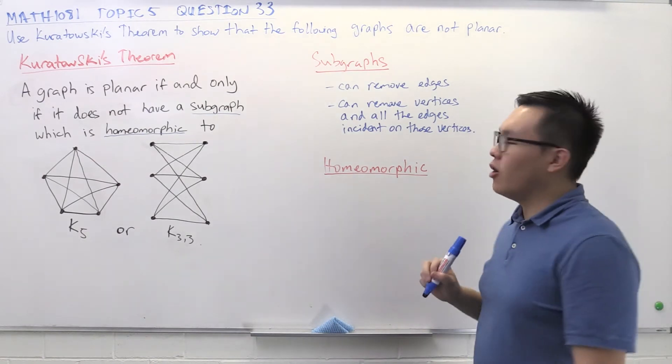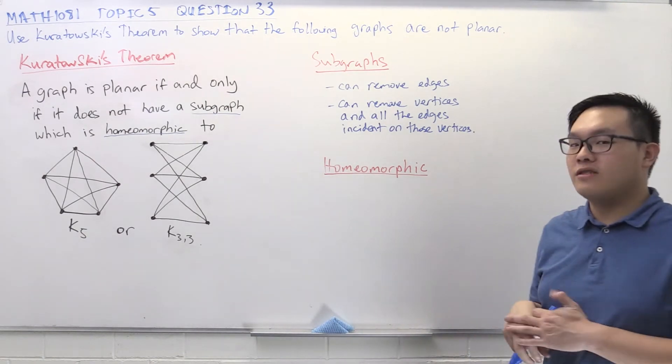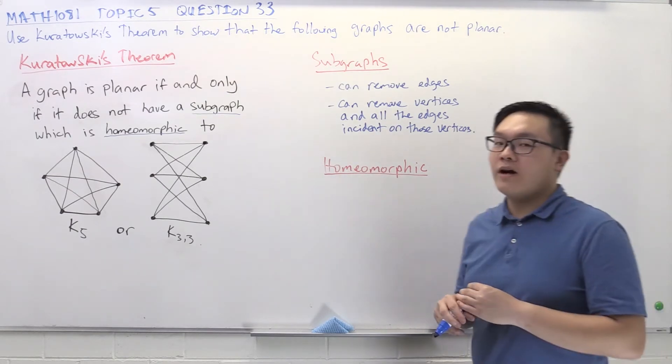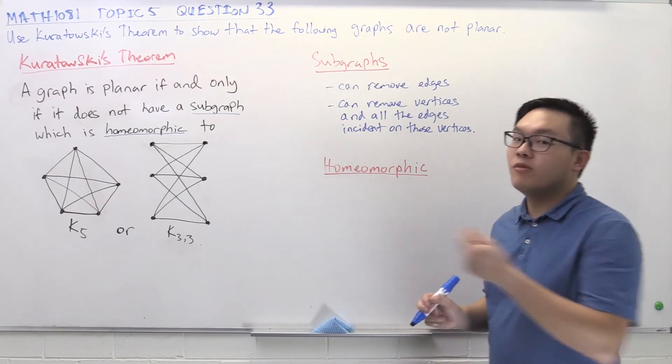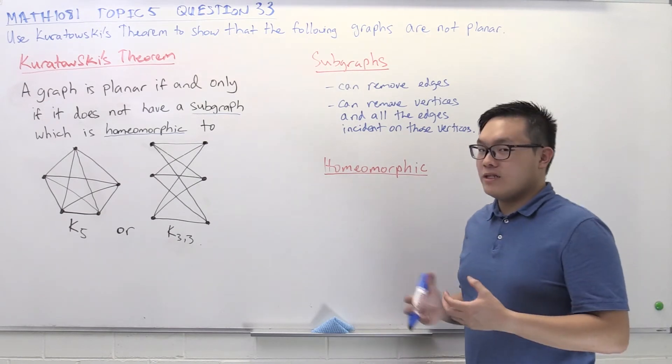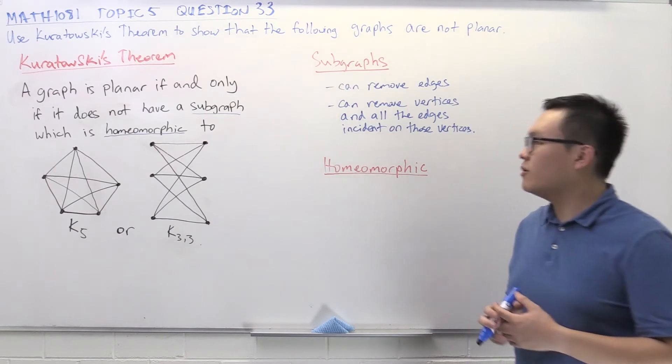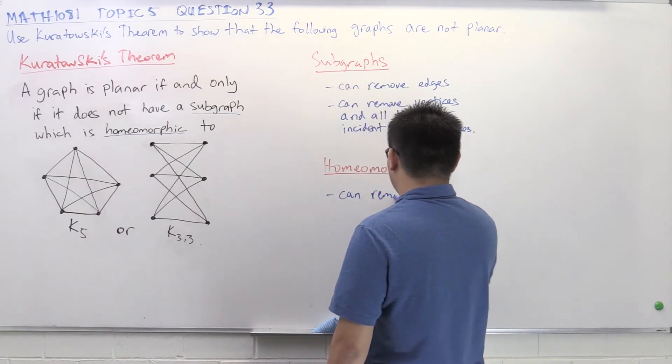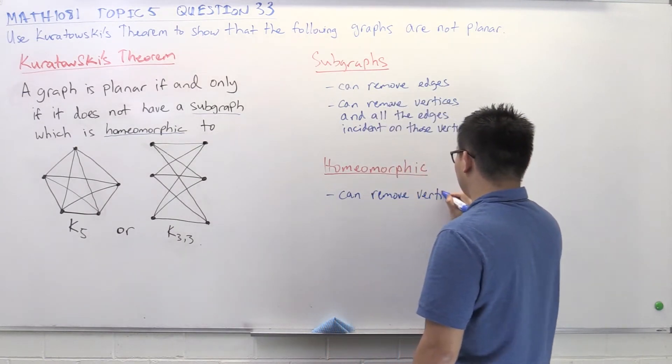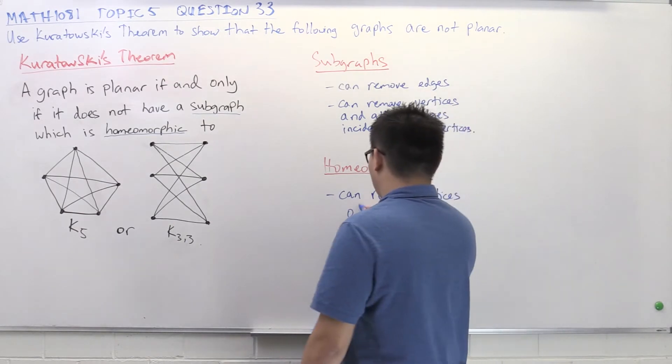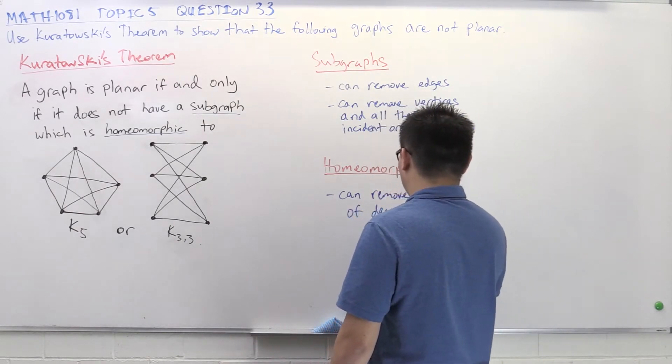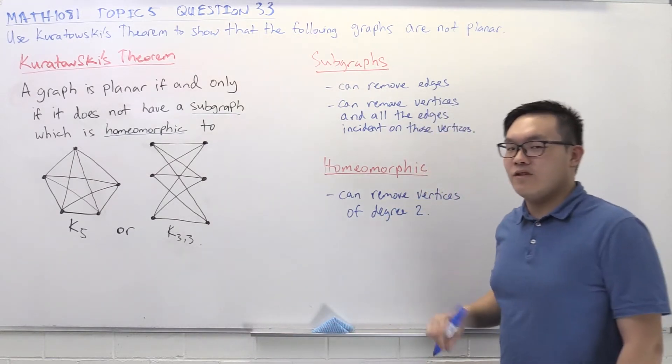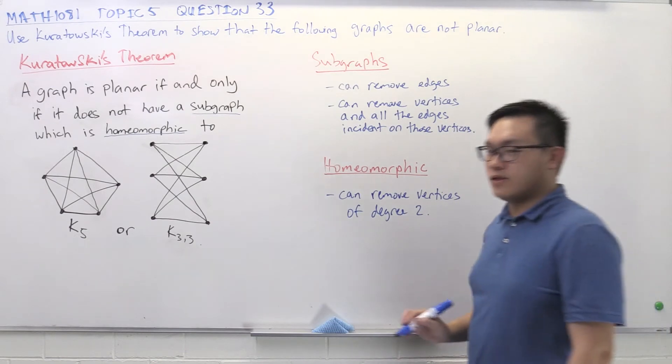What does it mean to be homeomorphic? Well, two graphs are homeomorphic if they only differ by edges of vertices of degree 2. So what we're allowed to do is we're allowed to remove or add back in vertices that are of degree 2. So in this case, we can remove vertices of degree 2.